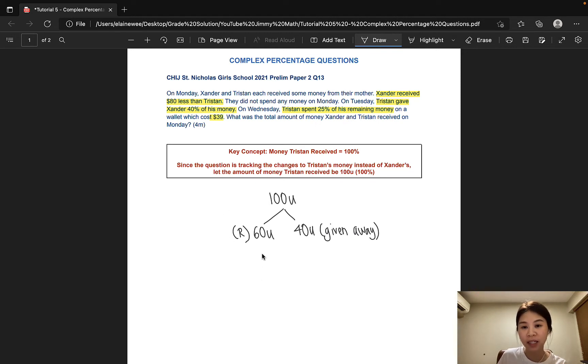25% of his remaining money means 25% of 60 units is spent on a wallet. Which means there is 75% that's untouched. Let's deal with the 25% because we have an actual monetary value to the 25%. So 25% of 60 units would be 25 over 100 multiplied by 60 units. 25% is actually one quarter. So that would give us 15 units.